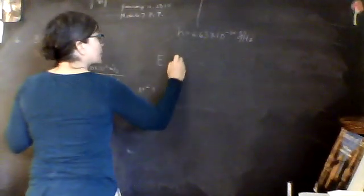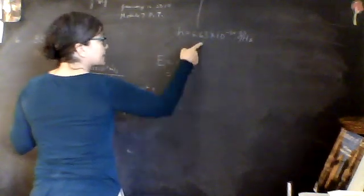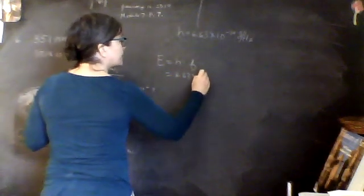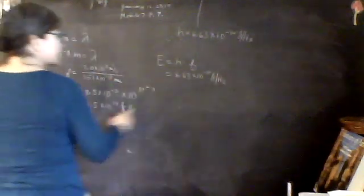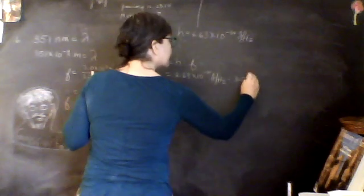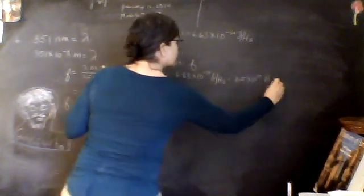Now to find the energy. Energy is Planck's constant times the frequency. Planck's constant is 6.63 times 10 to the negative 34 joules per Hertz times the frequency, which is 8.5 times 10 to the 14th Hertz.